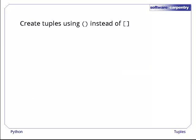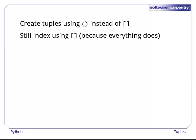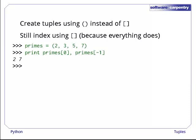In Python, we create tuples using parentheses instead of square brackets. We still index them with square brackets, though, because everything in Python that's indexed uses square brackets. For example, here's a tuple containing the first four prime numbers. Just as with a list, primes[0] is its first element and primes[-1] is its last. The empty tuple is written as empty parentheses and has a length of 0.